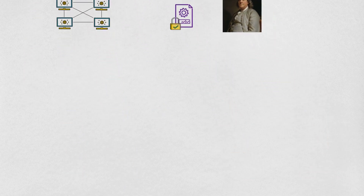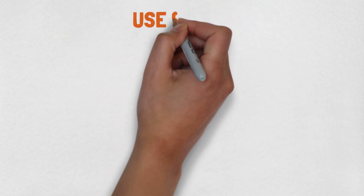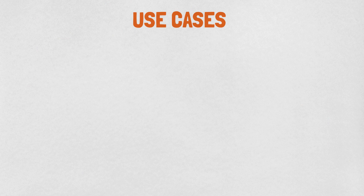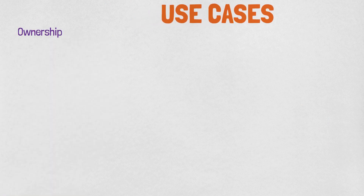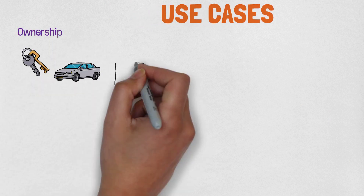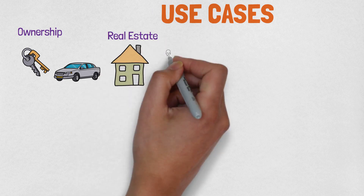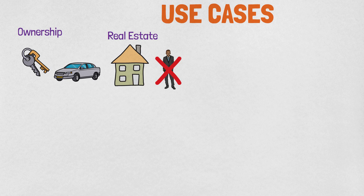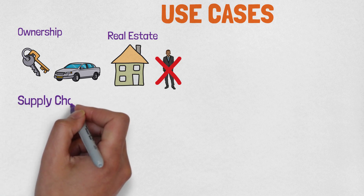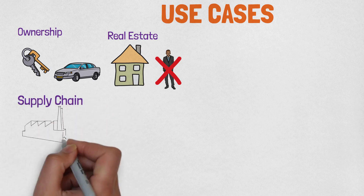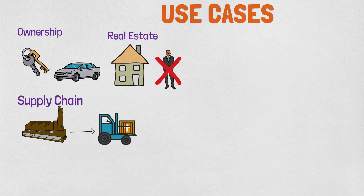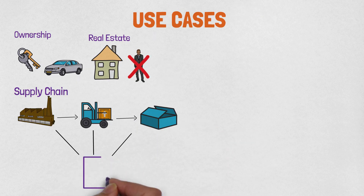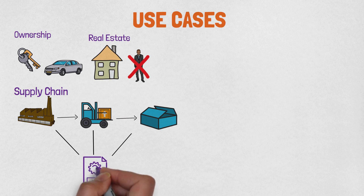Now for the last part of this video, I will show you a few examples of smart contract use cases. Smart contracts can be used to prove ownership of your car or a house. In real estate, they remove the necessity of hiring expensive lawyers and they simplify mortgage paperwork, as I mentioned at the beginning of this video. Smart contracts are also used in supply chains to automate operations. For example, every time a product moves from the factory to the end consumer, it is recorded in the blockchain and customers can check the exact origin of the product.